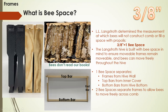Obviously bees don't read our books. This photo here shows improperly drawn comb called cross combing — instead of combing across the foundation, they've combed against the next foundation, so there are little strips of wax instead of an entire sheet. You'd have to cut this completely away and have them redraw it. But most of the time these measurements work out so this doesn't happen.